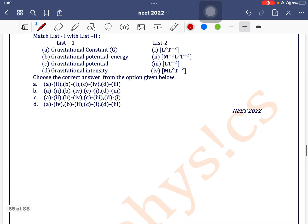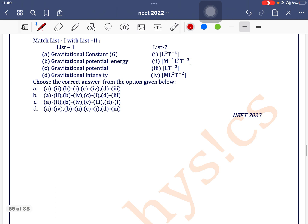Match List 1 with List 2. All the different variables are given and List 2 dimensions of the respective quantities are given. First one is gravitational constant. So for gravitational constant we can use formula F is equal to